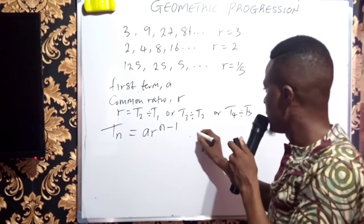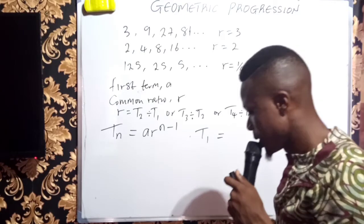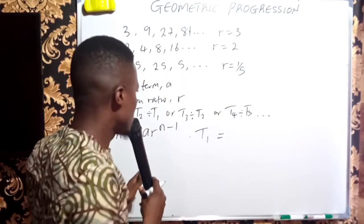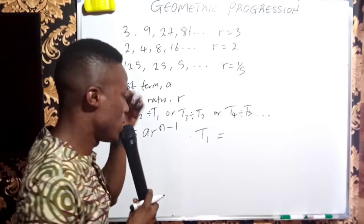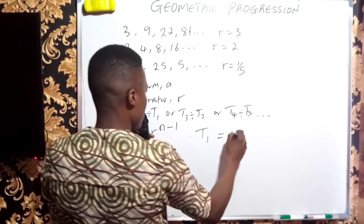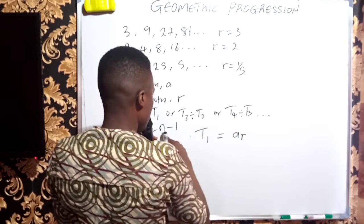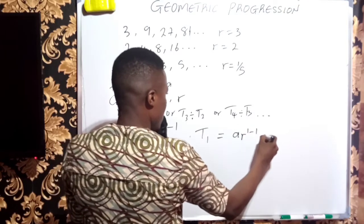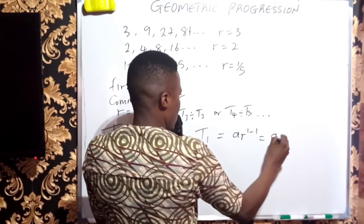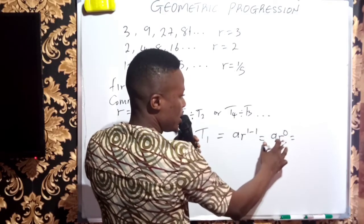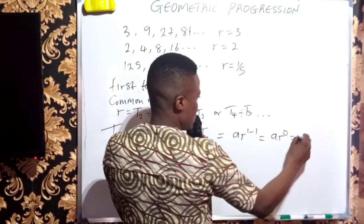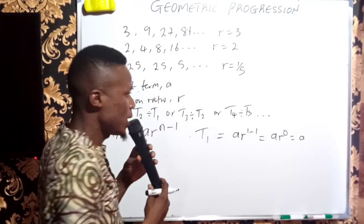Take for instance, if I'm talking about first term T1 here, it implies that I'm going to plug in 1 wherever I see my N because I'm talking about T1. So T1 will now be A times R to the power of 1 minus 1. So this is A times R to the power 0 because 1 minus 1 is 0 and anything to the power of 0 is 1. So 1 times A is A. Have you seen why the first term is A?